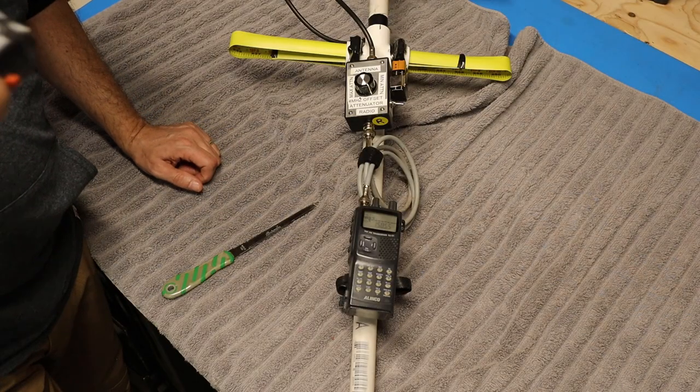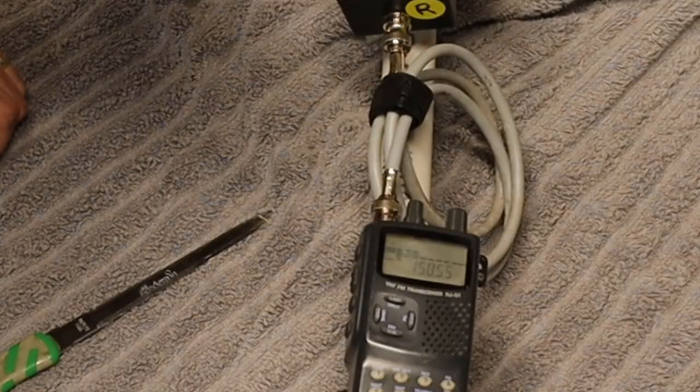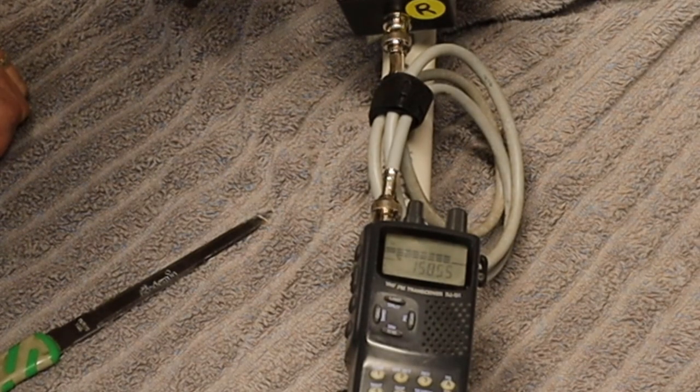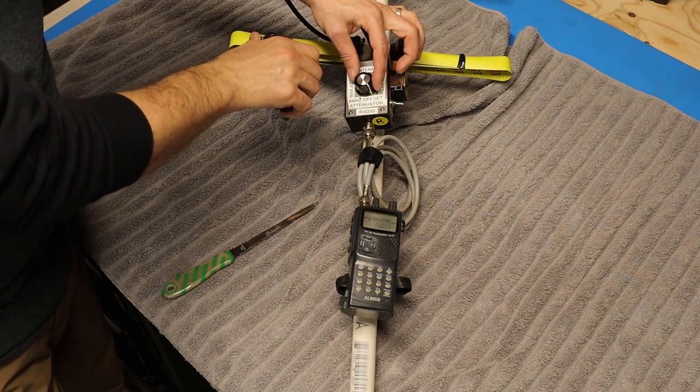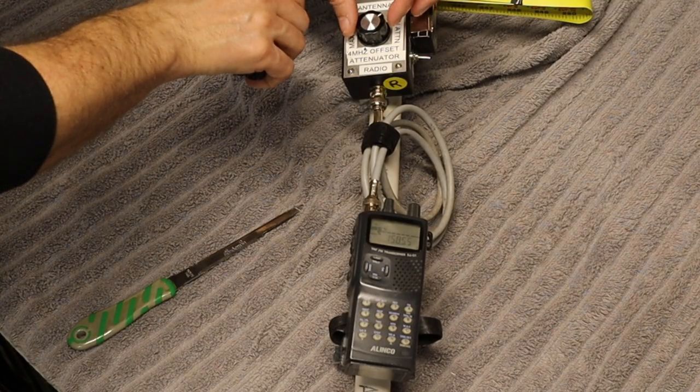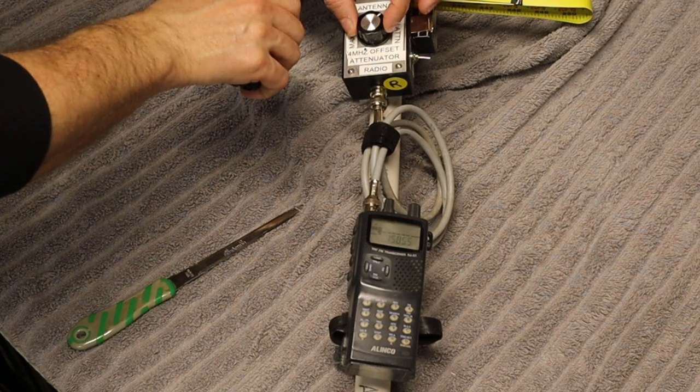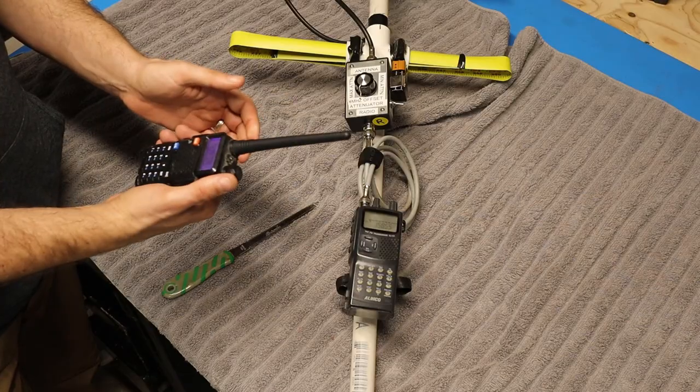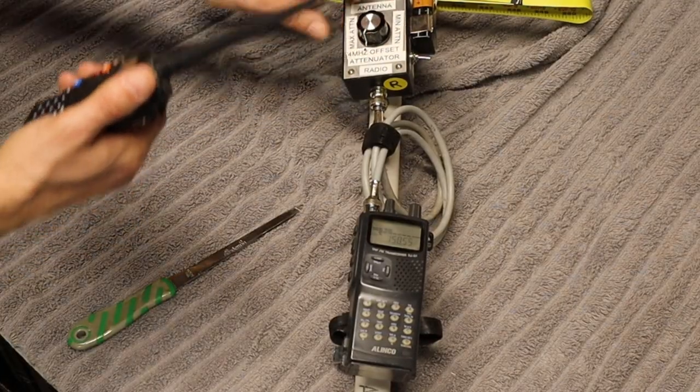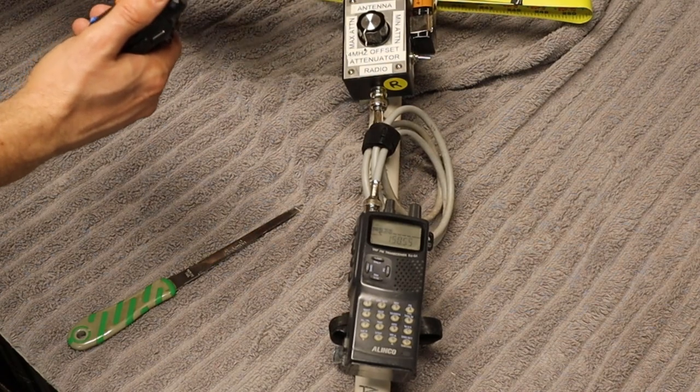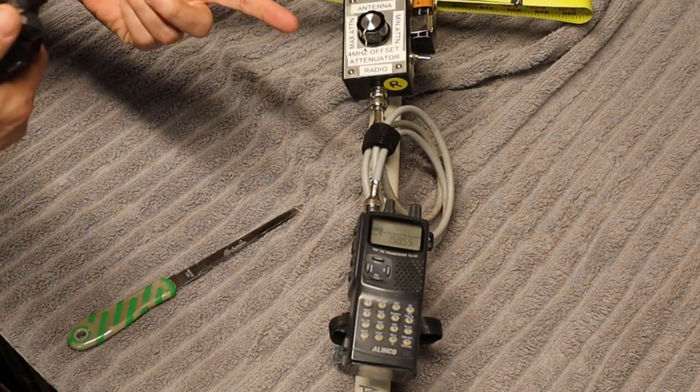Now if I bring the Baofang in close to the antenna, you can see the signal rises until it goes right up to full scale when I get real close. Now if I even hold the radio here while it's transmitting and turn the attenuation, you can see it cuts it right out to nothing. Now even if I put the antenna back on the Baofang and turn the control, I can still null it out even being less than a foot away from the antenna.